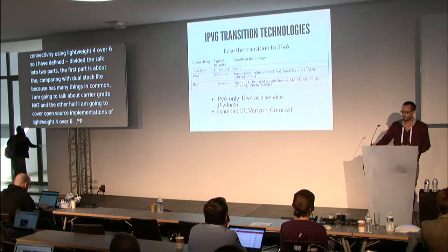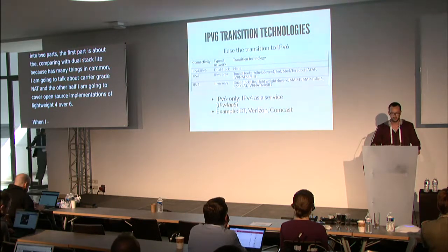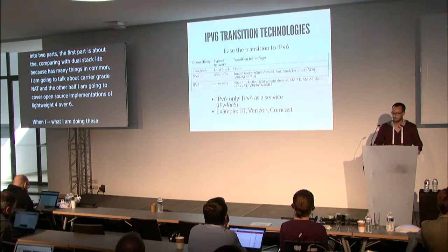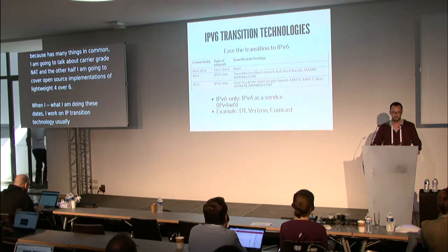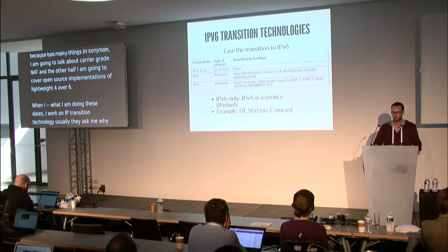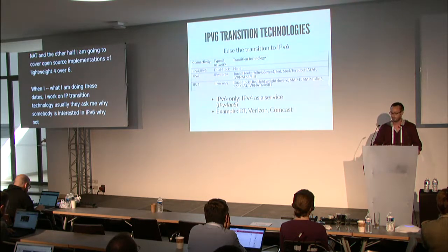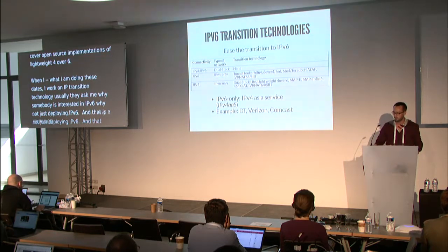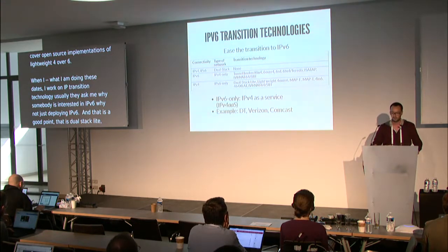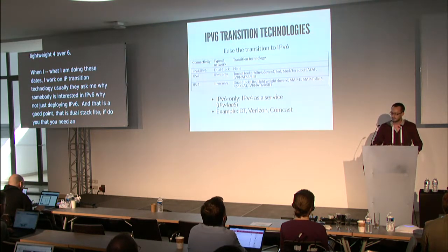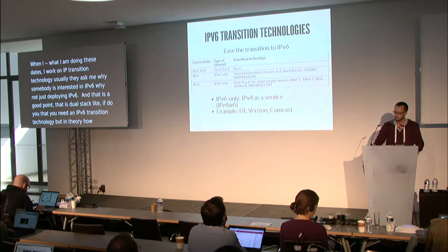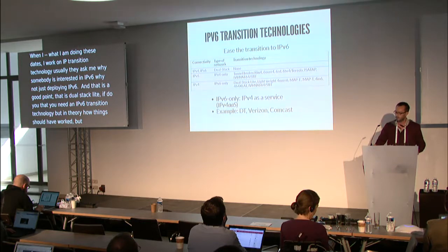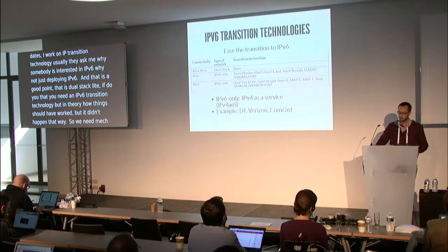When I try to explain to my friends what I'm doing these days and I tell them I work on IPv6 transition technology, they usually ask me: why is somebody interested in IPv6 transition technology? Why not just deploy IPv6? That's a good point. If you do that, you don't need an IPv6 transition technology. But that's in theory how things should have worked, and it didn't happen that way. So we need mechanisms for the transition to IPv6.